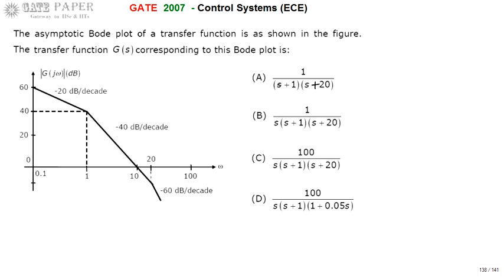We know that in a Bode plot, a pole contributes minus 20 decibels per decade and a zero contributes plus 20 decibels per decade slope. If there is a double pole, it is minus 40 decibels per decade. If there is a double zero, then it is plus 40 decibels per decade.